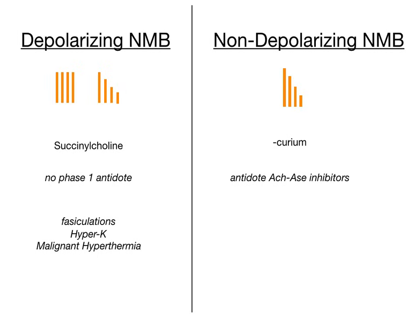Finally, malignant hyperthermia. Anytime you give someone a depolarizing neuromuscular blocker, they are at risk for developing malignant hyperthermia. Understand how you treat it — know about dantrolene, etc. Those are the main differences you should keep in mind for your test.